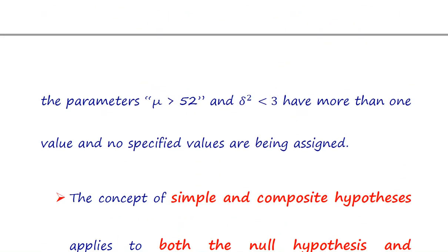So in both examples we do not know the exact distribution — this is the example of composite hypothesis. Composite hypotheses are explained mostly with the help of the alternative hypothesis.